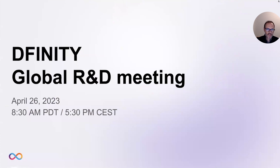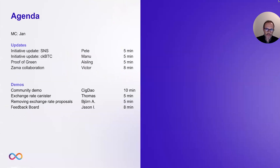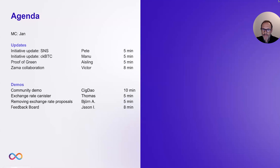The first demo will be on the next steps in the area of SNS. The second update will be on CKBTC, where we are and what the next steps are. Then everybody claims to be green, but actually you will see that the Internet Computer is way greener than everybody else, and Aisling will provide proof of that. Then we'll talk about our collaboration with Zama, and hopefully after the presentation by Victor, you'll all be equally excited. Then we'll move over to the demos, where the first demo will be from the community by SIGDAO. Then Thomas will present the exchange rate canister, and Björn will talk about what it means when we use the exchange rate canister in conjunction with the NNS.